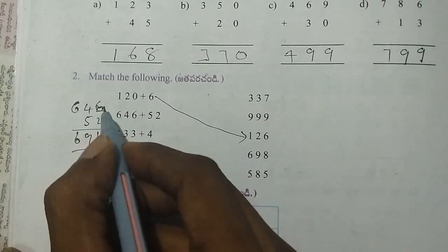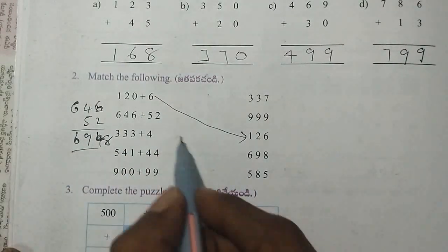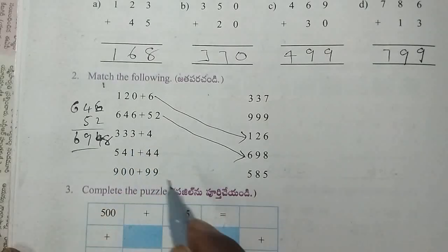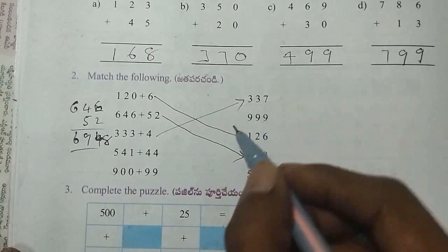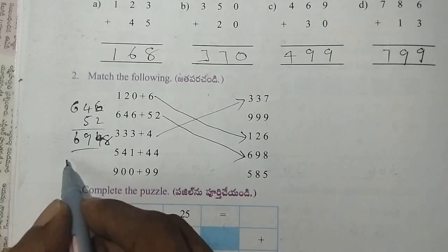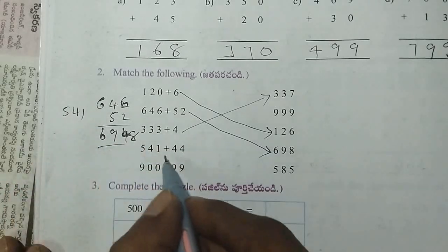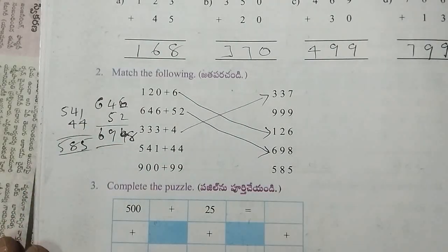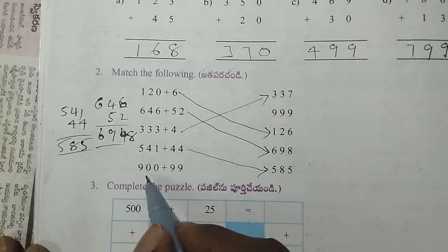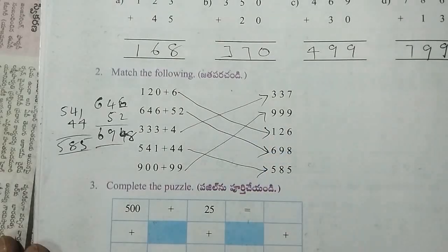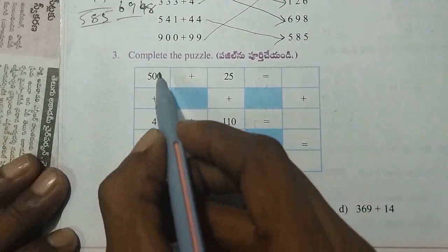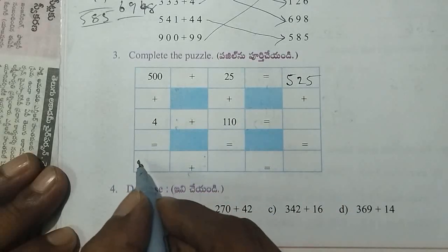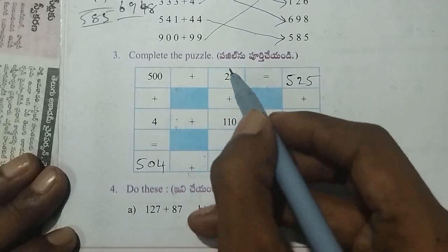4, 6 plus 8, 698. Next, 333 plus 4, 337. Next, 541 plus 44. 4 plus 1, 5. 4 plus 4, 8. 5, 585. Next, 900 plus 99, 999. Next, 500 plus 25, 525. Next, 500 plus 4, 504. Next, 100 plus 25, 125.